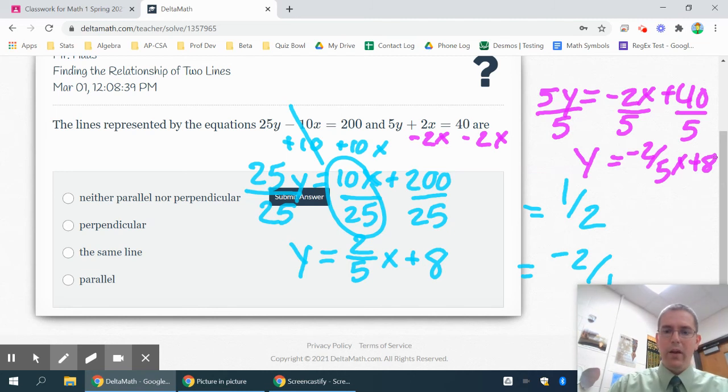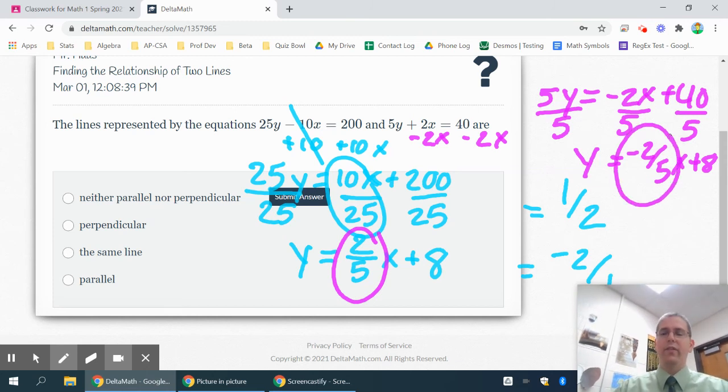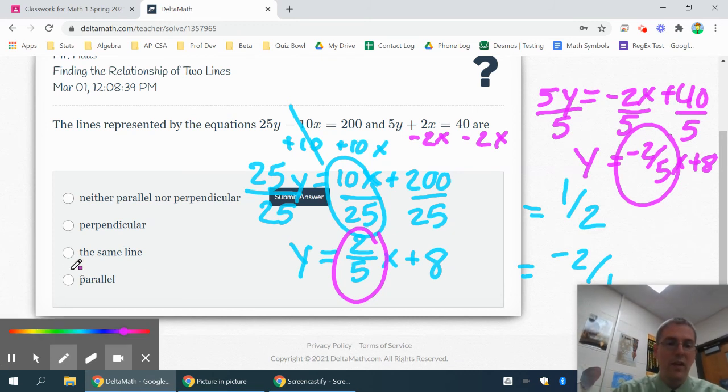Once again the plus 8 doesn't matter, what I'm really caring about is the slope. So this slope is a positive two-fifths, this slope is a negative two-fifths. They're not the same since one's positive and one's negative. They're not perpendicular because although I changed the sign I did not flip the fraction, so these are neither parallel nor perpendicular.